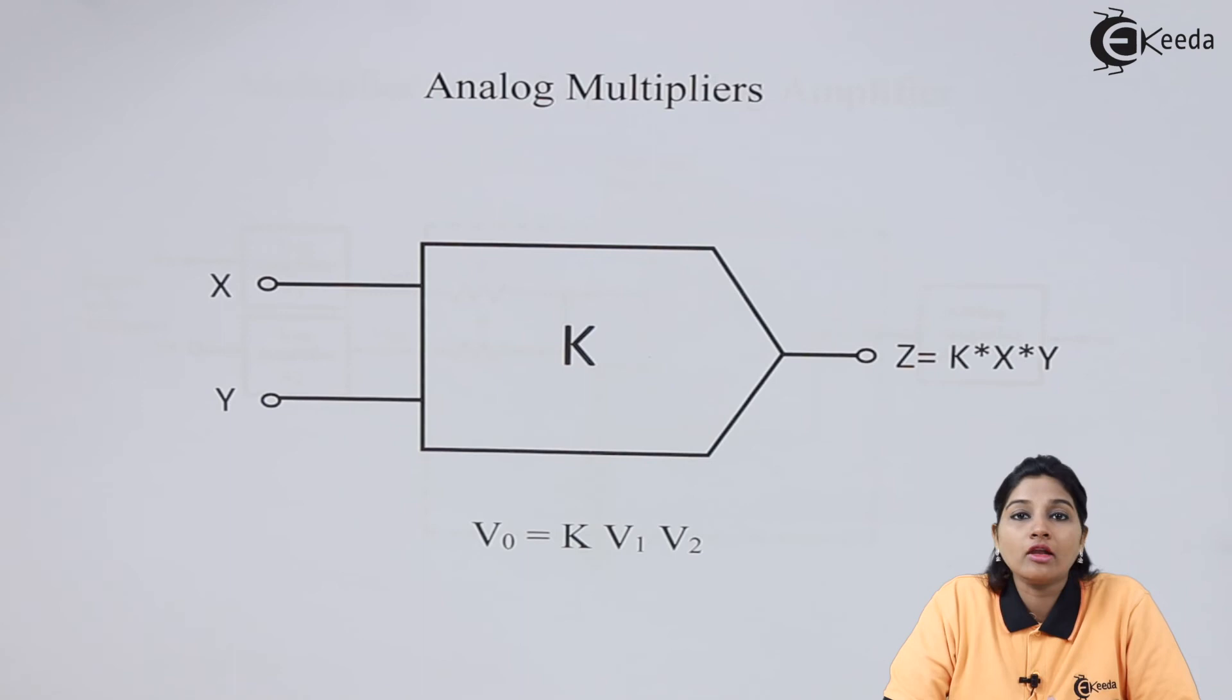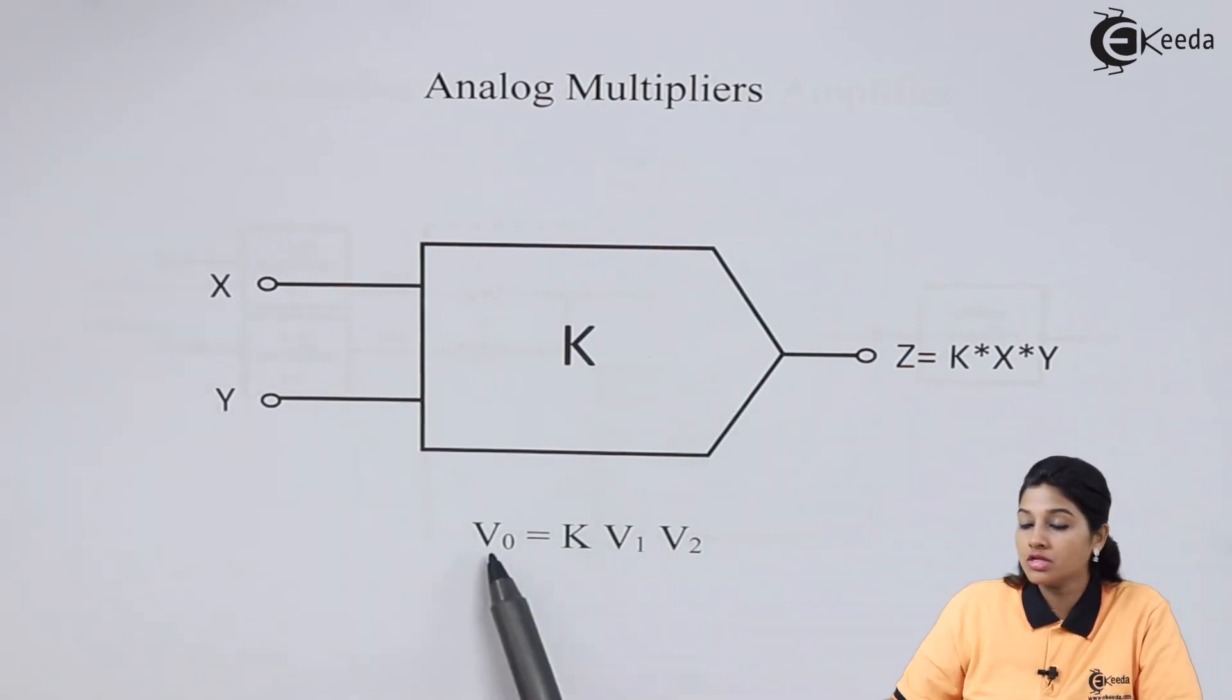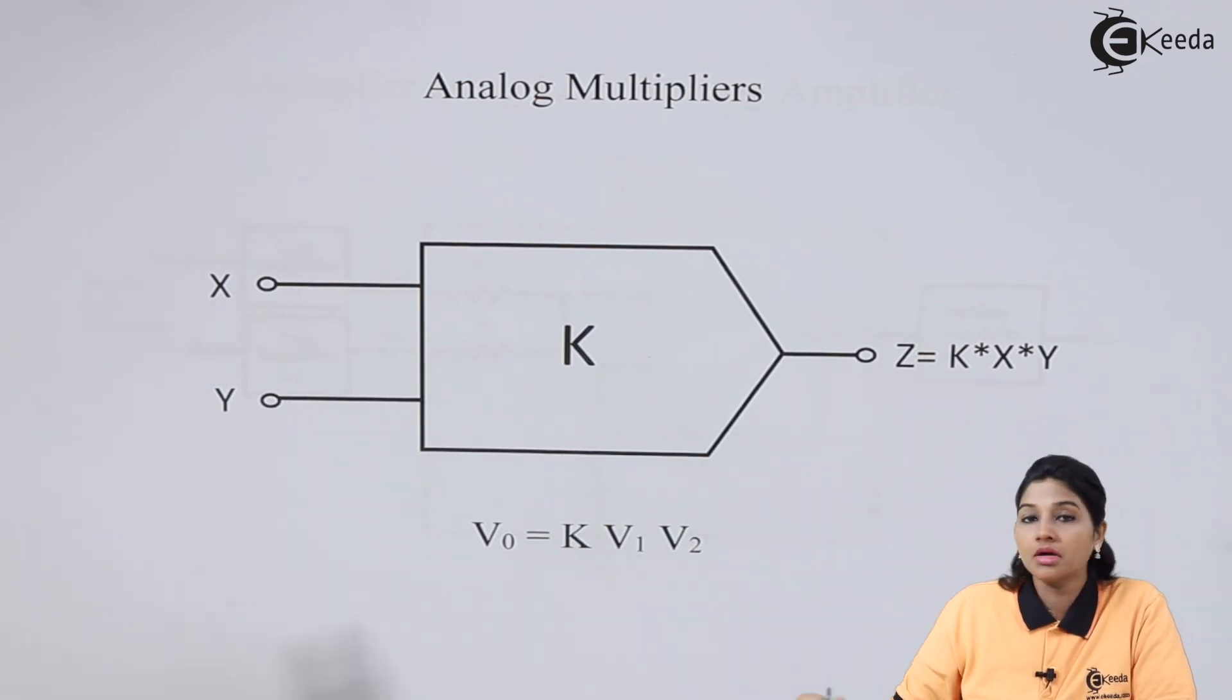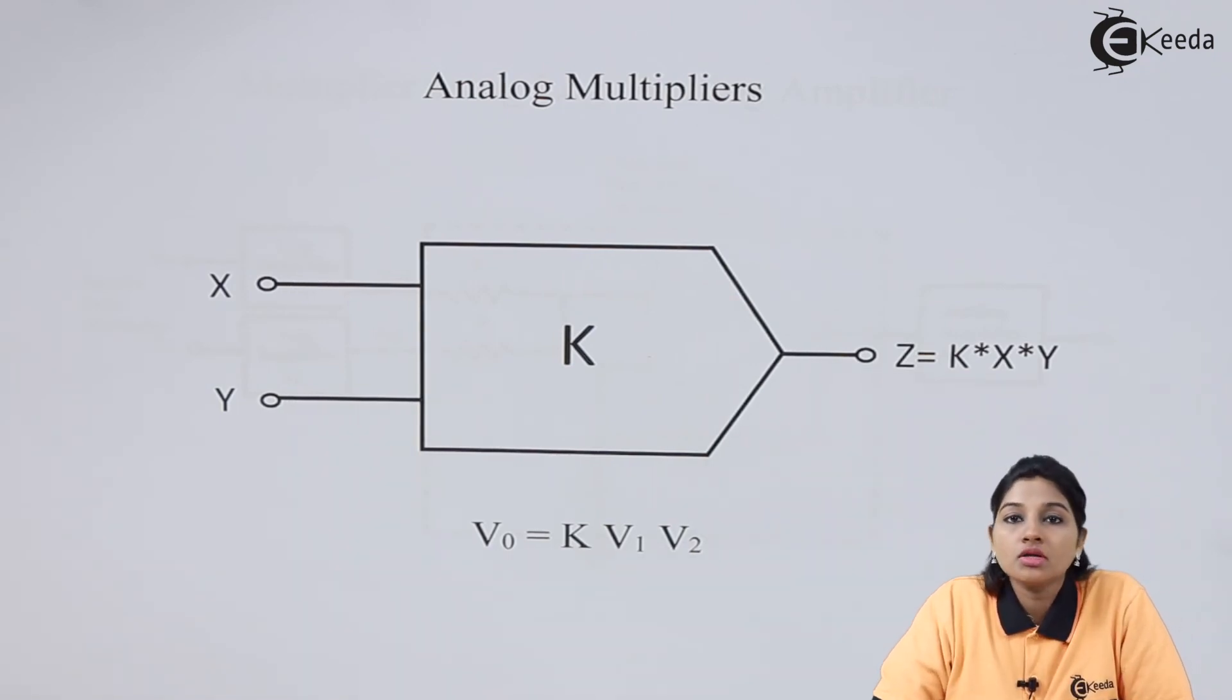So this is about the Analog Multiplier which provides output voltage Z or V0 as a multiplication of input signals, that means X, Y, or V1, V2, get multiplied along with the Scaling Factor that is nothing but K. So I hope you understand the topic of Analog Multiplier.